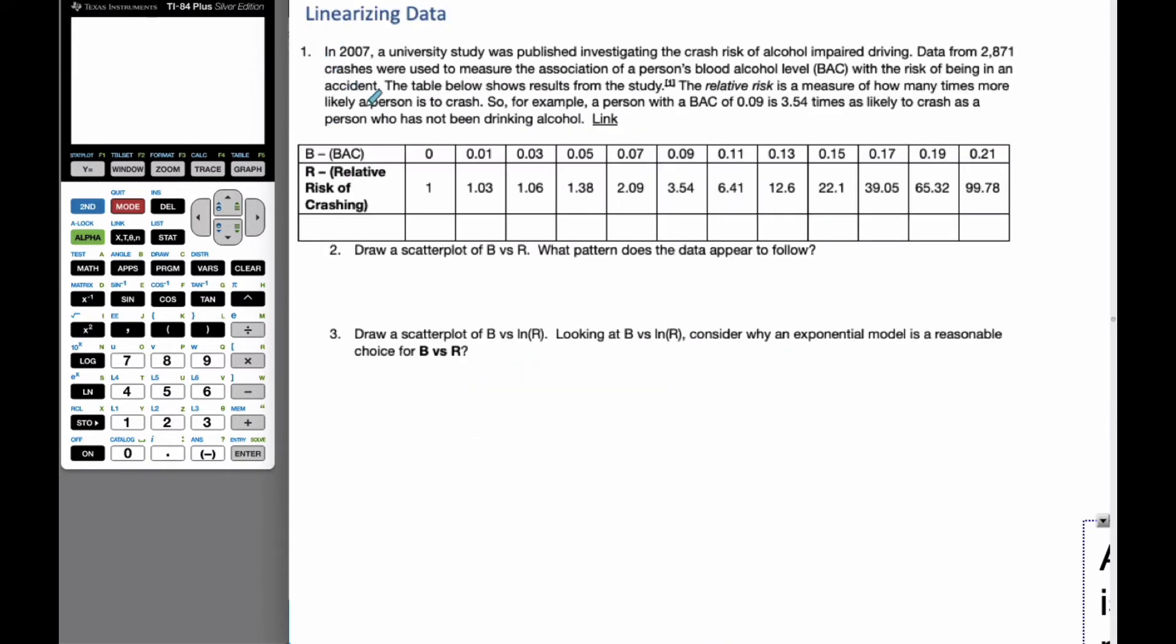So let's take a look at this scenario here. In 2007, a university study published investigating the crash risk of alcohol-impaired driving. Data from a lot of crashes were measured with the blood alcohol level, the BAC, with the risk of being in an accident. This is the table, and it shows a relative risk is measured of how many times more likely a person is to crash. An example, a person with a blood alcohol level of 0.09 is 3.54 times more likely to crash than someone who's not been drinking. So if you've not been drinking, your likelihood of crashing is 1. If you've been drinking and your blood alcohol level is 0.09, your likelihood of crashing is 3.5 times more than if you weren't drinking. That's how this chart works.